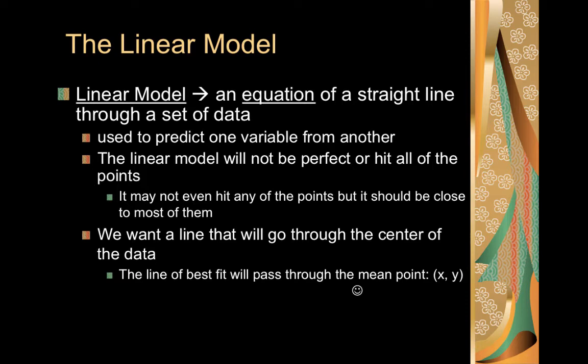We want our line to go through the center of the data, so we want it to be in the center so it has points even on both sides. And really, this is going to end up being the line of best fit. And this line of best fit will pass through the mean point x̄ and ȳ. That would be the mean point.